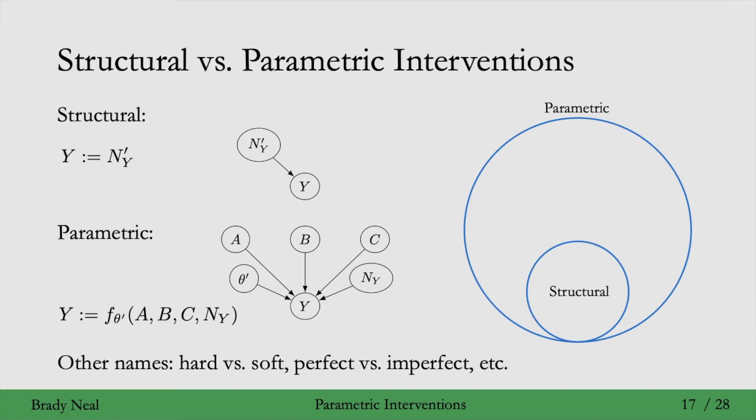You can recover a structural intervention from a parametric intervention when you set theta prime such that the function f is constant with respect to A, B, and C. So the function just ignores A, B, and C. Then you would have recovered a structural intervention from a parametric intervention.